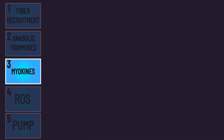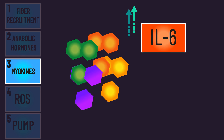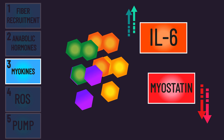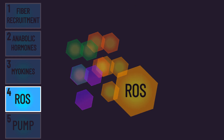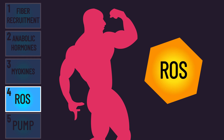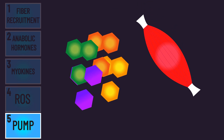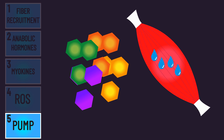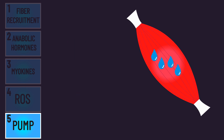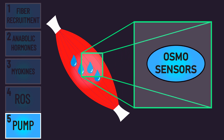The third is that high metabolic stress could increase myokines that promote hypertrophy, like interleukin-6, and decrease myokines that limit muscle growth, like myostatin. The fourth is that reactive oxygen species, a metabolite, could play a role in promoting muscle growth. The fifth and final one is that metabolic stress is closely associated with a pump — the swelling of muscle fibers — and this swelling might activate certain osmoreceptors that go on to promote growth.